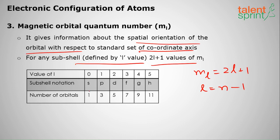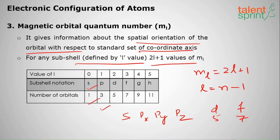When l is equal to 0, the subshell is s and the number of orbitals is 1. The p subshell has 3 orbitals: px, py, and pz. The s subshell has only 1 orbital, d has 5 orbitals, and f has 7 orbitals.